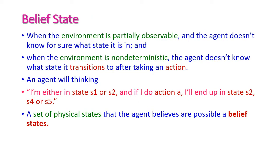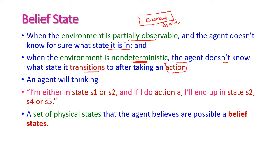If the agent is in a partially observable environment, then it does not know which state it is currently in — that is, it does not know anything about the current state. And if the environment is non-deterministic, the agent does not know which state it transitioned to after taking an action; it does not know where it will reach — that is, the next state.